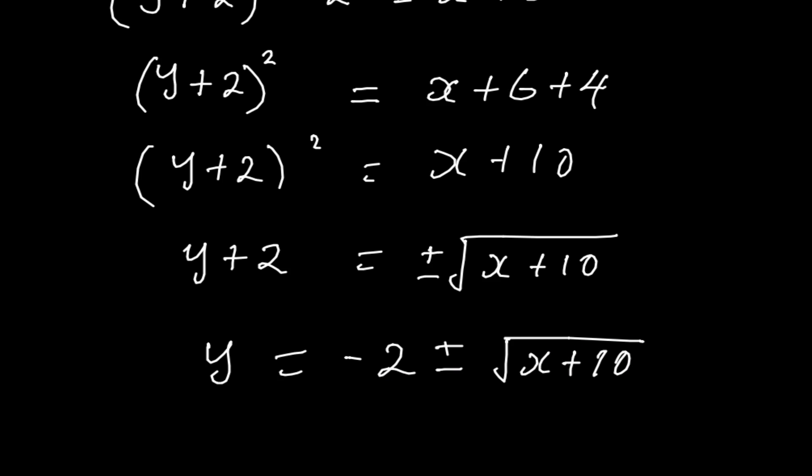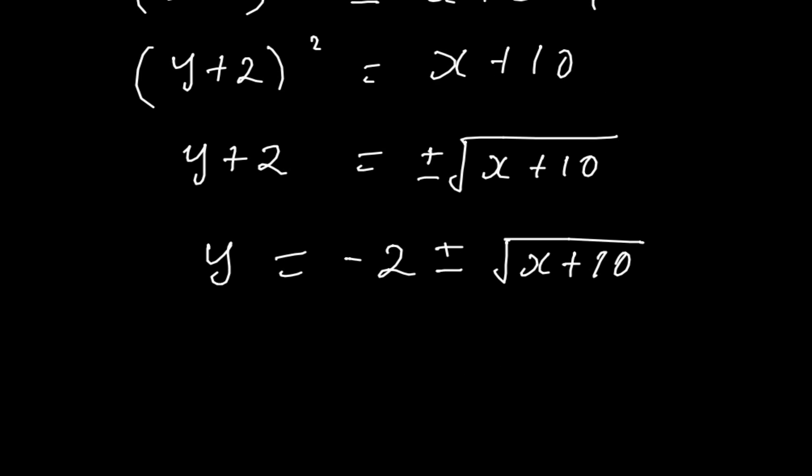So this is the inverse of our function. The inverse of f(x) equals -2 ± √(x + 10). Thank you.